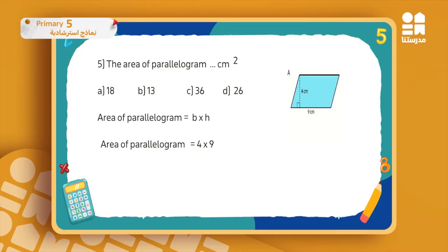Question five: we have a parallelogram and I want to know its area. The choices are 18, 13, 36, and 26. We remember the rule: area of a parallelogram is base times height. So it will be four times nine, which is 36 centimeters squared. The answer is letter C, 36 centimeters squared.